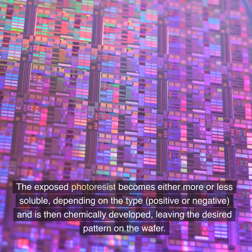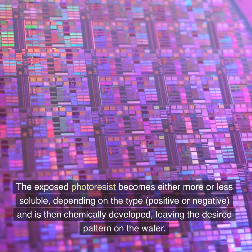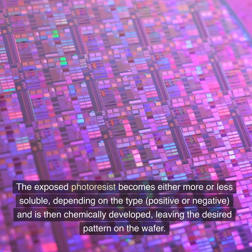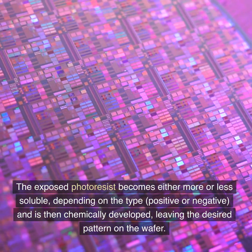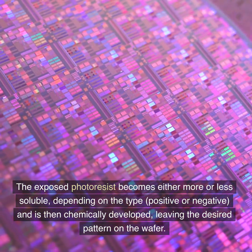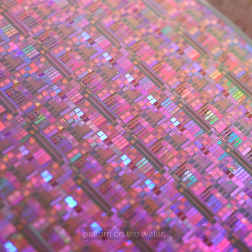The exposed photo resist becomes either more or less soluble, depending on the type — positive or negative — and is then chemically developed, leaving the desired pattern on the wafer.